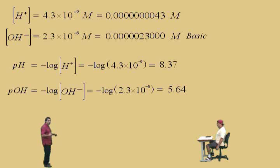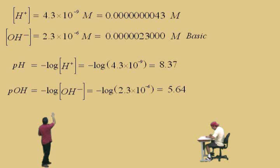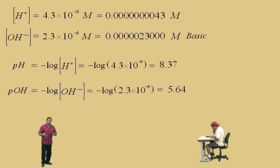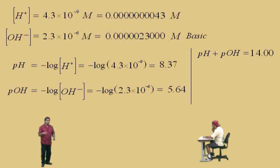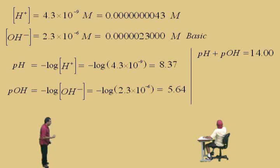Now, remember earlier — we have all our information: the hydrogen ion concentration, hydroxide ion concentration, our pH, and pOH. Suppose we use the fact that the sum of pH and pOH equals 14.00.